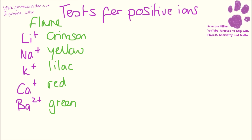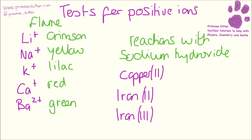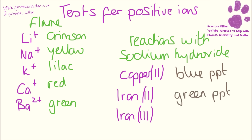The other tests for positive ions that you need to know are the reactions with sodium hydroxide. You need to know that copper 2 will give a blue precipitate, iron 2 will give a green precipitate, and iron 3 will give a brown precipitate. Now this is sometimes hard to see in the lab, but don't worry about what you see in the lab because this is what the exam board wants to see.